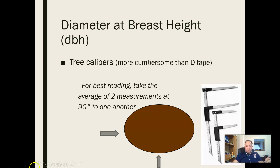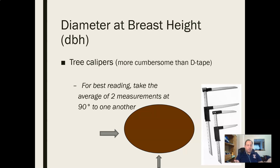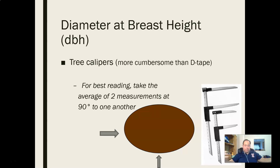With calipers, you want a minimum of two separate measurements, 90 degrees from each other — measure the tree one way, then rotate 90 degrees and measure again. You can take up to four measurements and average them for your DBH. One other difficulty with calipers: if you have really big trees, you need really big calipers, which makes them very difficult to carry around the forest.